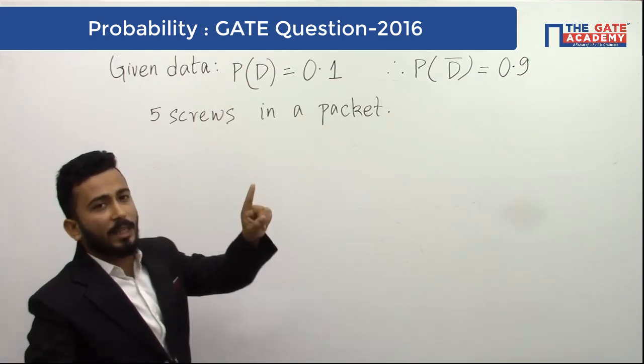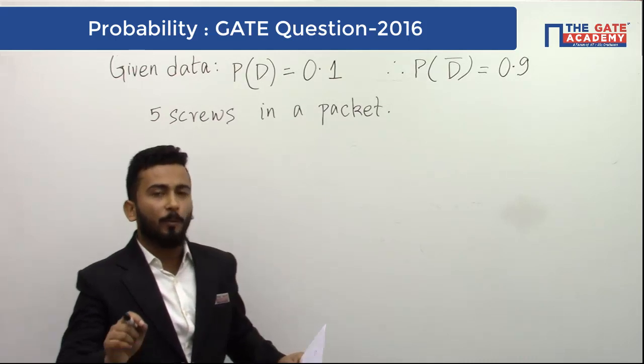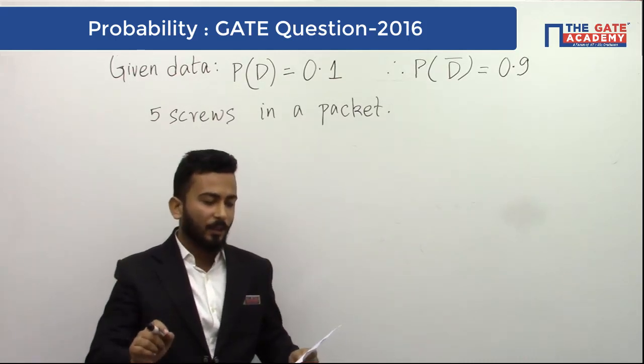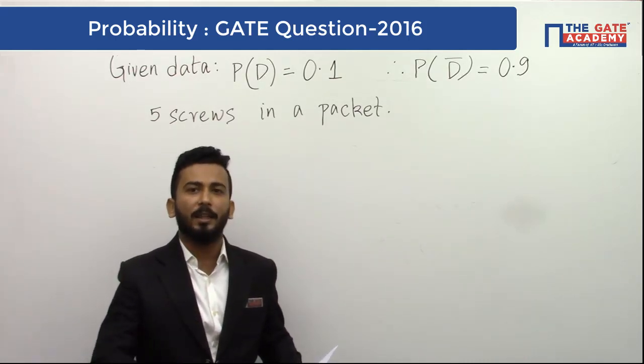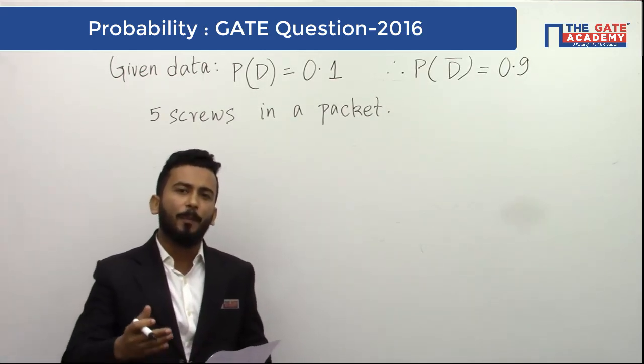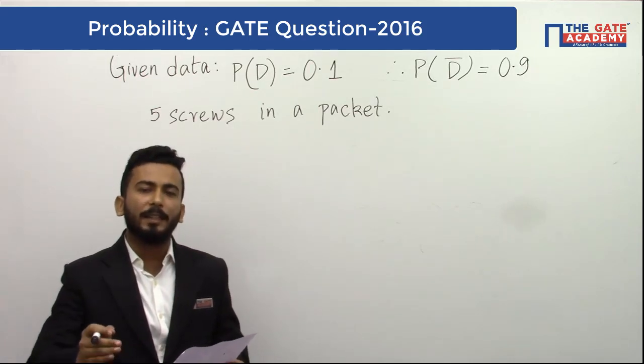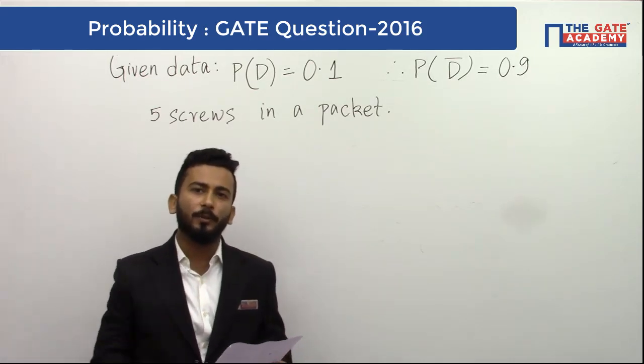Five screws are there in a packet and we have to find the probability that a packet would have to be replaced. Now when will the packet be replaced? Only if it contains a defective screw, right?